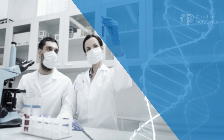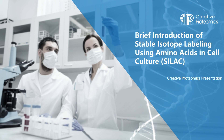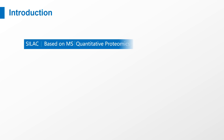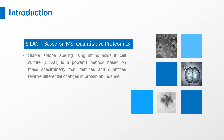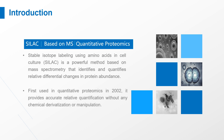Hello, welcome to watch the Creative Proteomics videos about protein quantification. Today, we are going to learn some basic knowledge about SILAC, stable isotope labeling using amino acids in cell culture. SILAC is a powerful method based on mass spectrometry that identifies and quantifies relative differential changes in protein abundance. First used in quantitative proteomics in 2002, it provides accurate relative quantification without any chemical derivatization or manipulation.